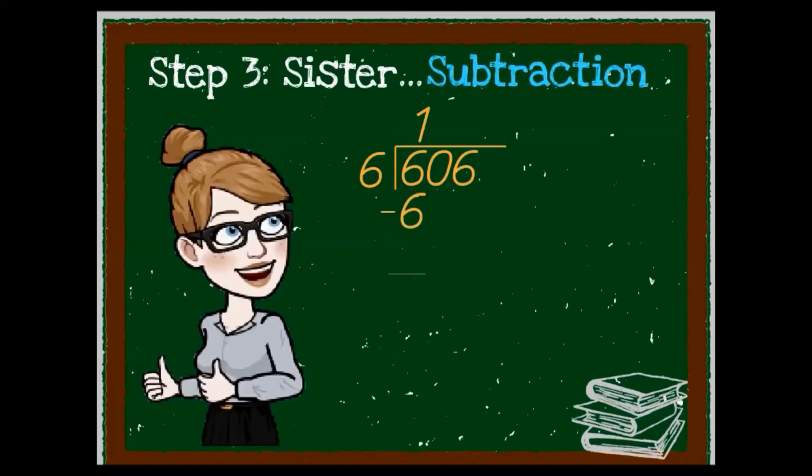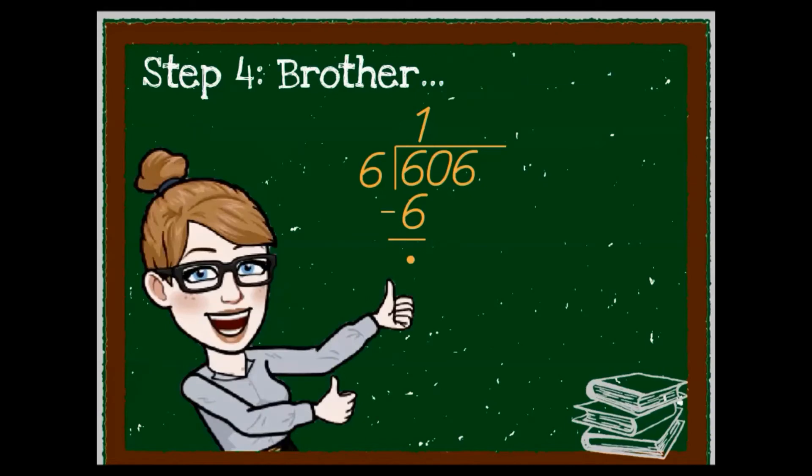Sister for subtraction. Six minus six is zero and we make a little dot for the zero. Brother is for bringing it down.